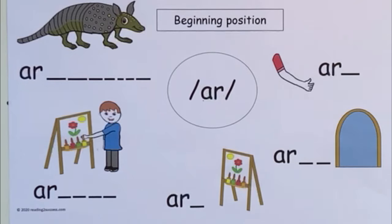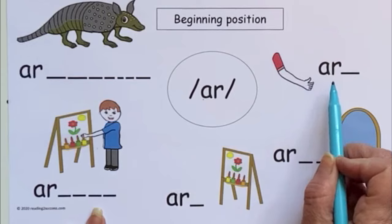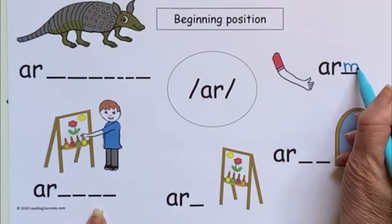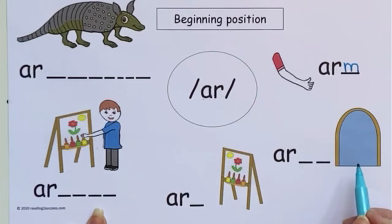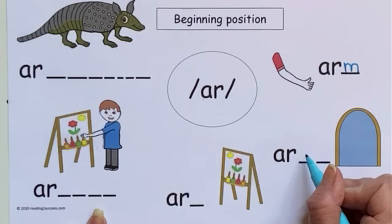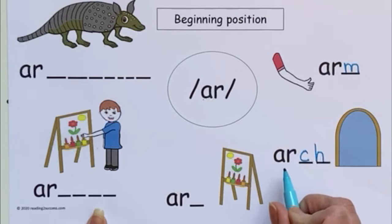Now have kids make words with the A-R R-Controlled Vowel at the beginning of each word. Let's look at our first picture: arm. We have the A-R and then we add M to get the word 'arm.' This is an arch — we have A-R and then add CH, and now we have the word 'arch.'